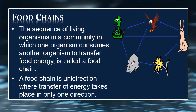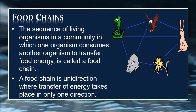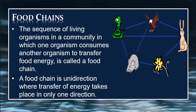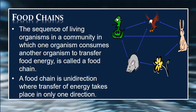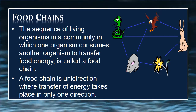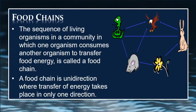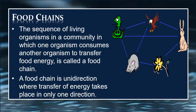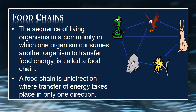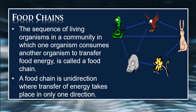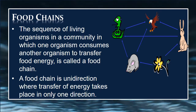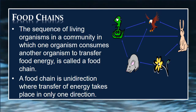Food Chains: The sequence of living organisms in a community in which one organism consumes another organism to transfer food energy is called a food chain. A food chain is unidirectional, where transfer of energy takes place in only one direction.